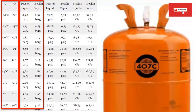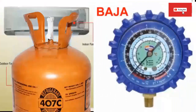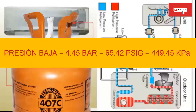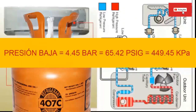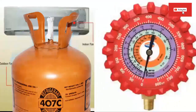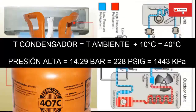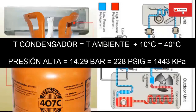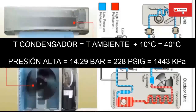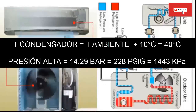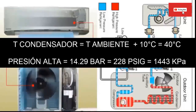Working with vapor (dew) pressure, which is the most commonly used: to reach a temperature of 5 degrees Celsius in the evaporator — typical of air conditioning systems (41°F) — a low gauge pressure of 4.45 bars is needed, equivalent to 65.42 psi or 449.45 kilopascals. For an outdoor temperature of 30 degrees Celsius, the condenser temperature is about 10 degrees Celsius above the environment, so at 40 degrees Celsius (104°F), the high gauge pressure in the condenser is 14.29 bars, equivalent to 228.88 psi or 1,443.29 kilopascals.